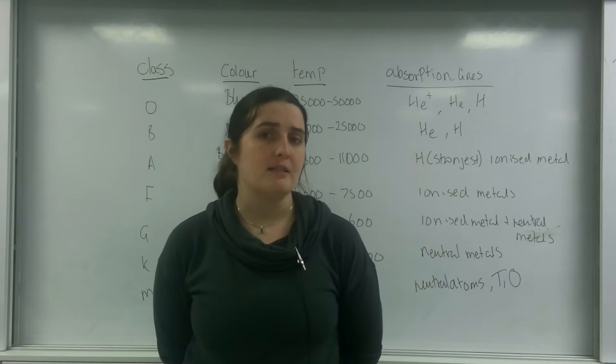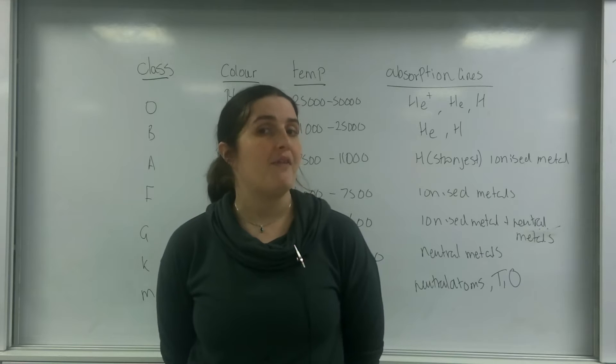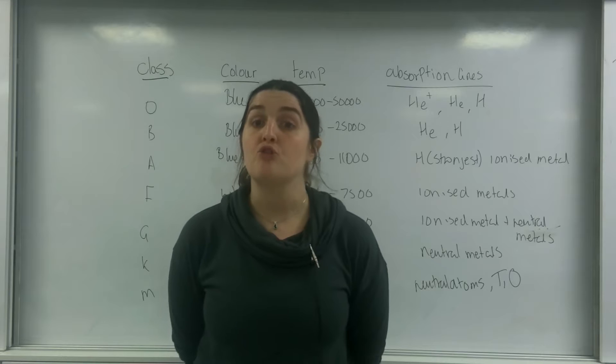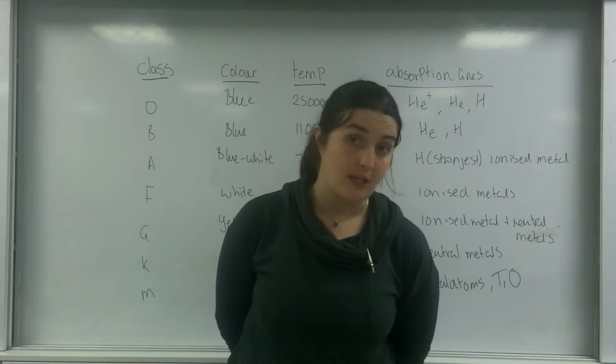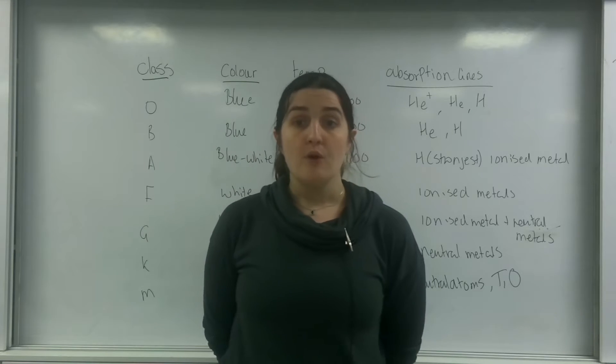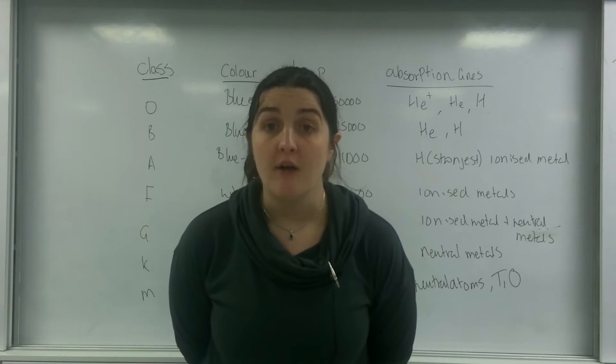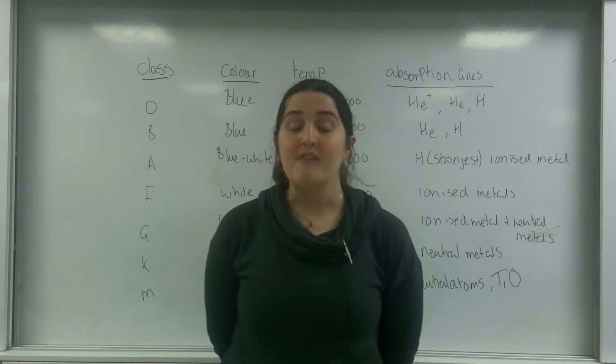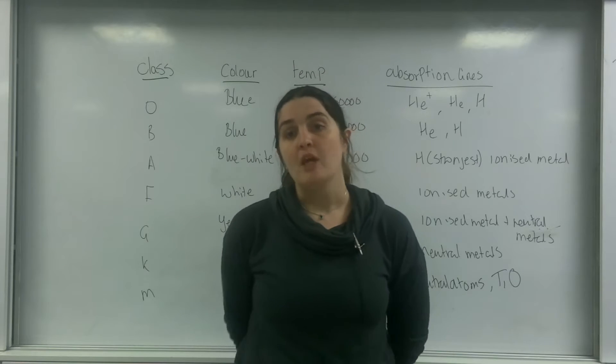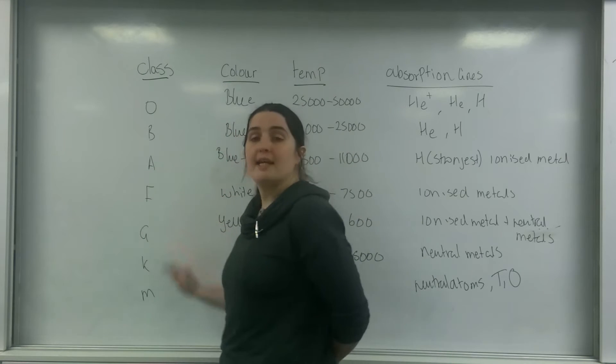The hotter stars, the ones with the weakest Balmer lines, might actually be weak because they are too hot, not because they are cold. So instead of reclassifying every single star, they changed the order. And this is the order that we use today, which is O-B-A-F-G-K-M.